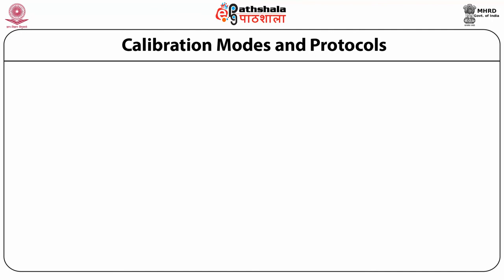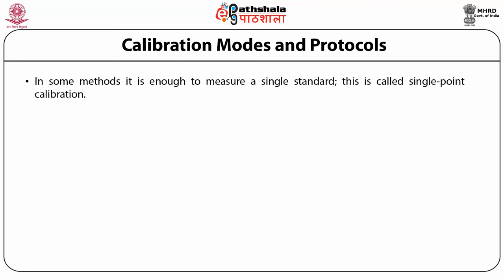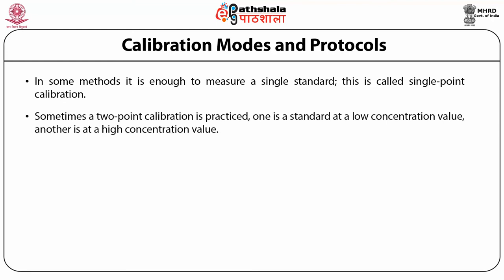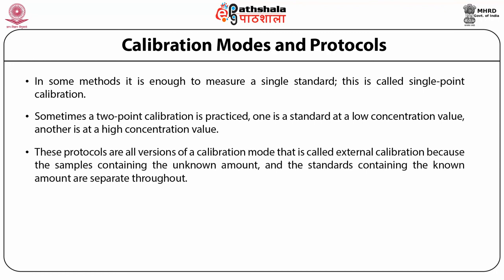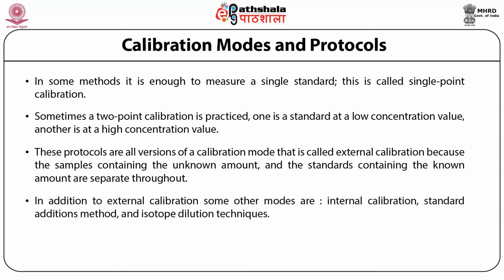Calibration modes and protocols: while calibration is generally practiced in analytical laboratories, the exact mode of operation varies depending on the analytical method. In some methods it is enough to measure a single standard — this is called single point calibration. Sometimes a two-point calibration is practiced: one standard at a low concentration value and another at a high concentration value, chosen to bracket the values of the unknown. These protocols are versions of a calibration mode called external calibration, because the samples containing the unknown amount and the standards containing the known amount are separate throughout.